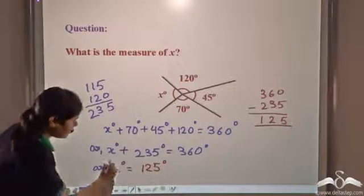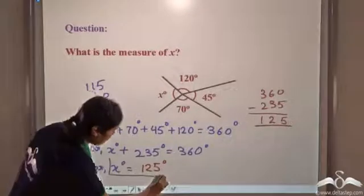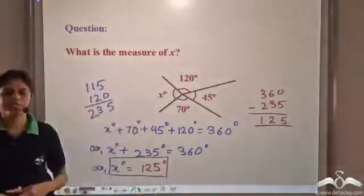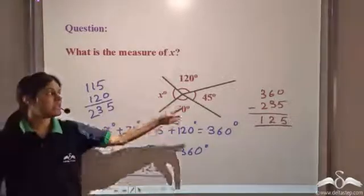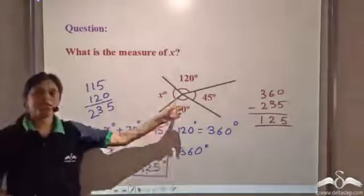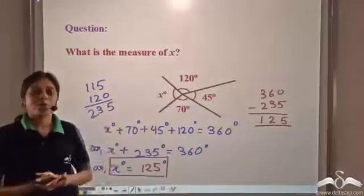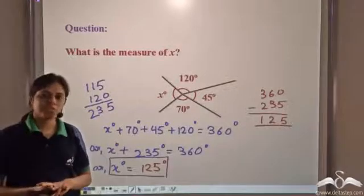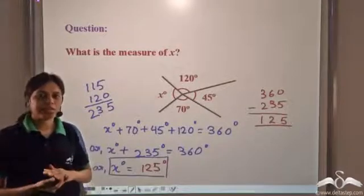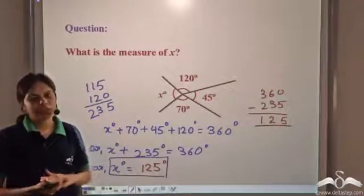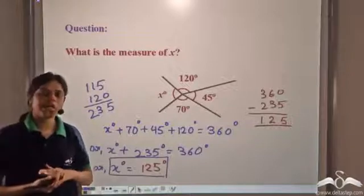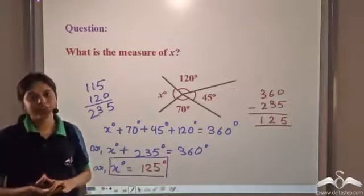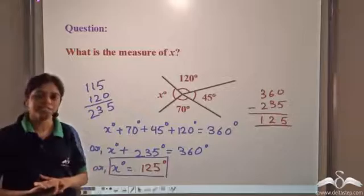So, using this, we can say that all angles around a point are equal to 360 degrees, angles on a straight line measure 180 degrees, and angles in a right angle measure 90 degrees.